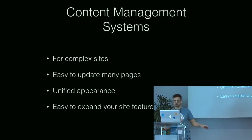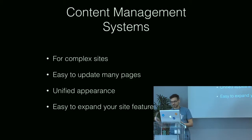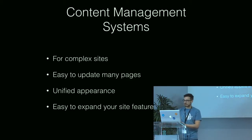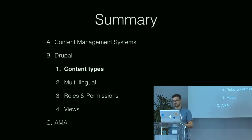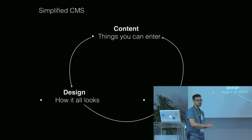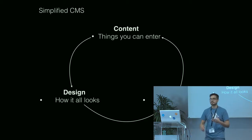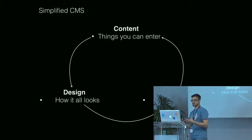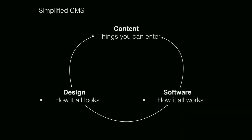Without forgetting to update the sidebar on this page or the footer on that page — and it was also very easy to expand your features. In a very simplistic view, a content management system consists of three elements: you have the content, which is the things that you enter; the design, which is how it all looks; and the software that brings it all together, packages it up and delivers it to your browser.